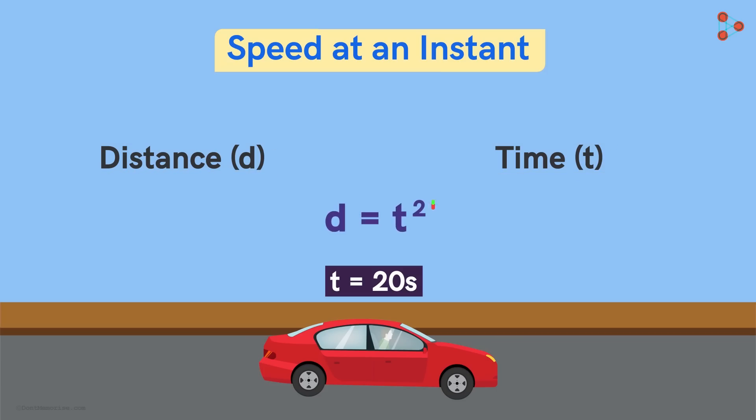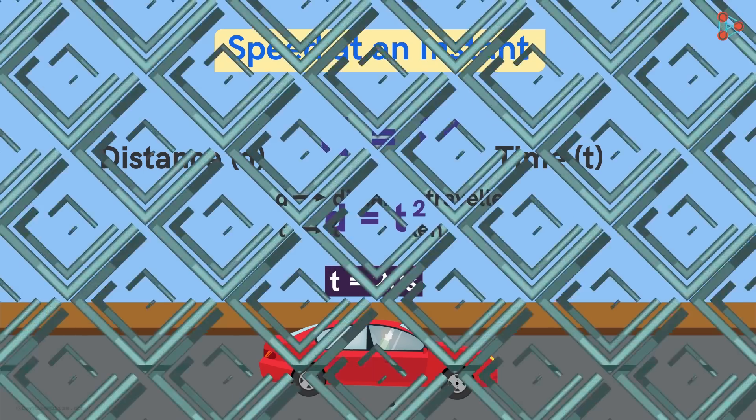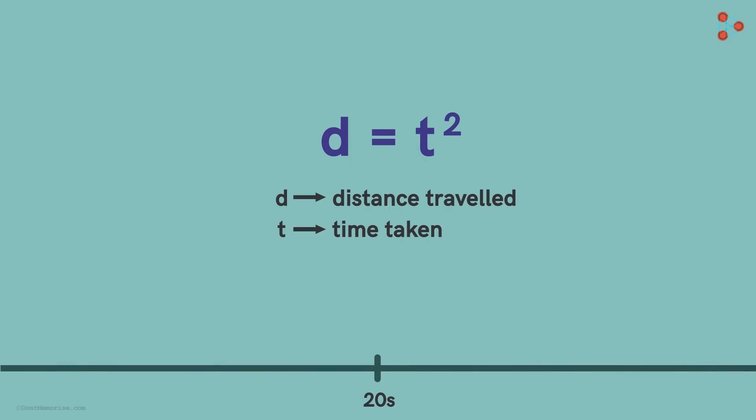Notice what this relation tells us? It gives us information about the car's position at each instant of time near this point. Let's see how powerful this relation is in figuring out the speed at this instant.